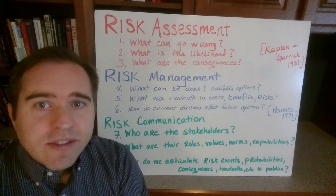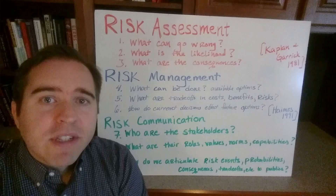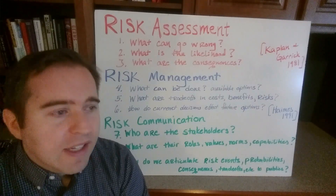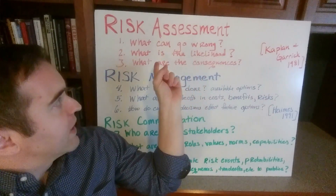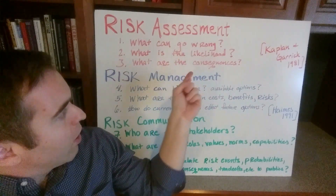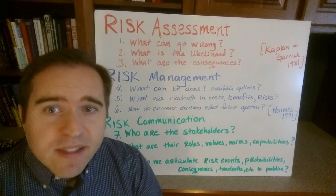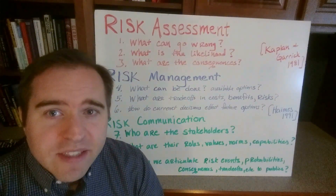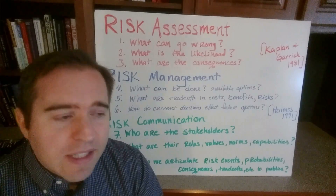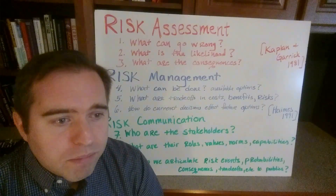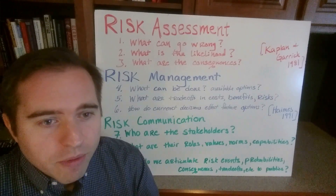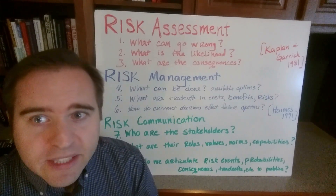The risk assessment answers three questions that were presented by Kaplan and Gehrig in the first issue of the first volume of the journal Risk Analysis. They say that a risk assessment answers the questions: what can go wrong, what is the likelihood, and what are the consequences? This is directly from the definition of risk — a measure of the probability and severity of adverse effects. What can go wrong provides a frame of reference of all the risk events that are concerning.